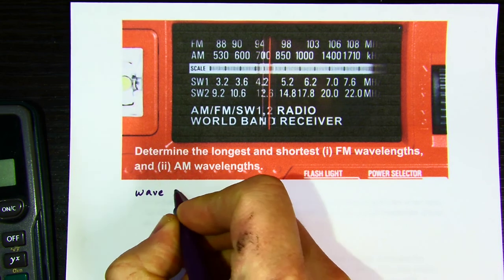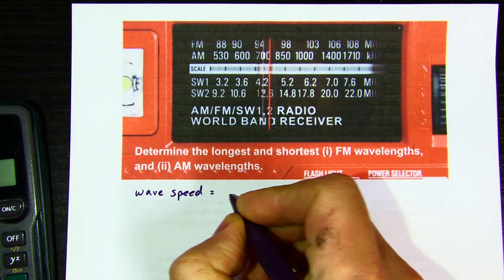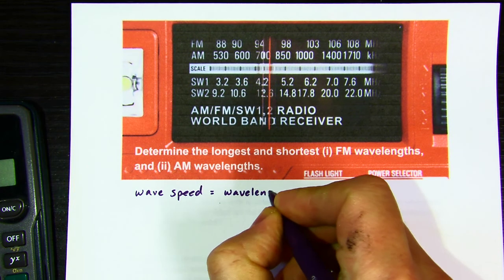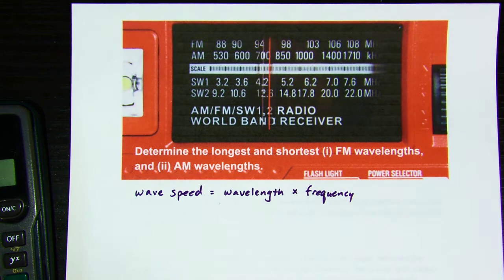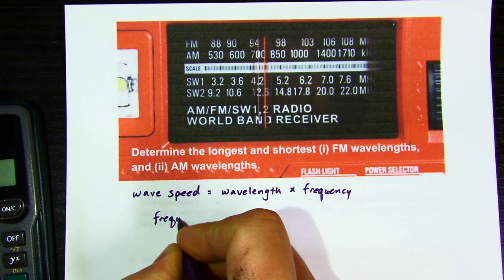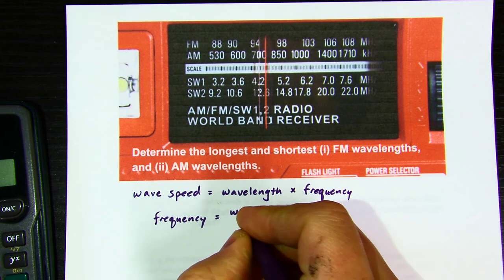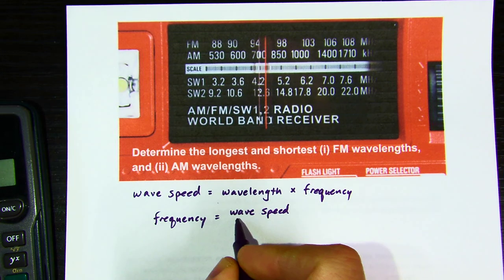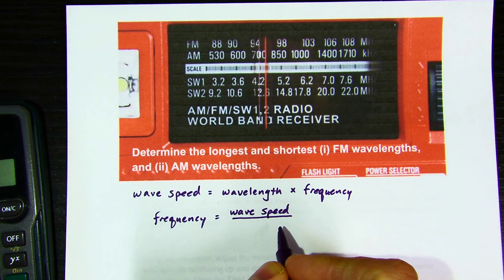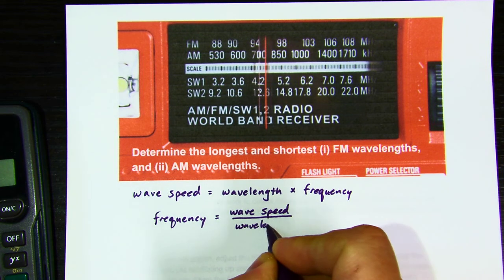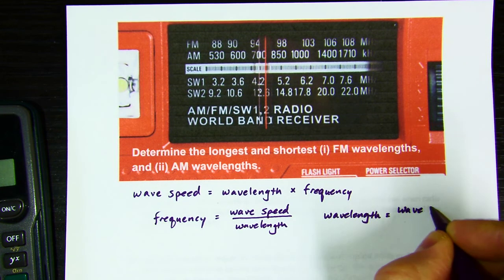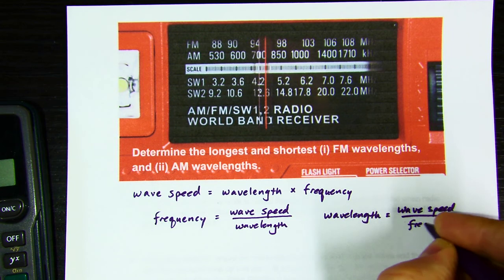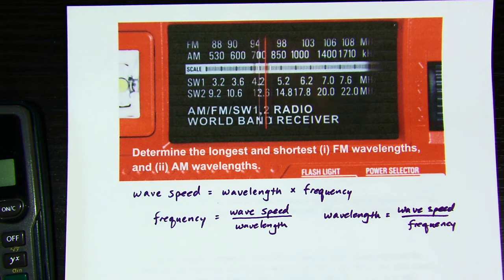All of these are going to be calculated off a relationship we introduced several lectures ago, namely that wave speed equals wavelength times frequency. You can divide both sides by wavelength and find that frequency equals wave speed divided by wavelength, or what we're going to need: wavelength equals wave speed divided by frequency. You can rearrange that three-factor relationship three different ways to find wave speed, frequency, or wavelength. We're going to use the latter one.